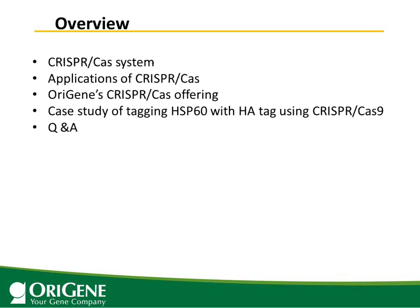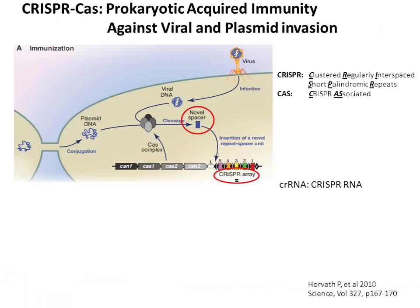First, this is an overview. I want to give you an introduction about the CRISPR-Cas system and its applications in research, and then what OriGene can offer to help your CRISPR-Cas project. Then I will give you detailed procedures on how to use CRISPR-Cas using a case study — tagging HSP60 with HA tags — followed by a Q&A.